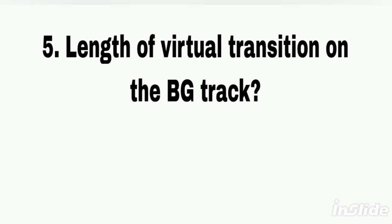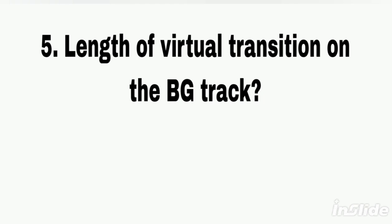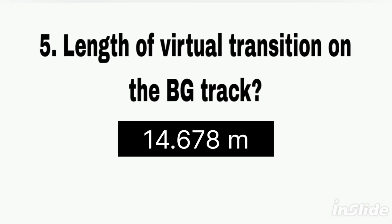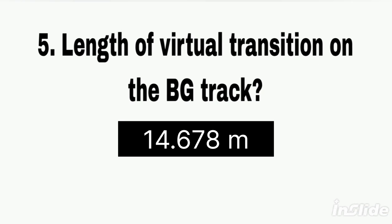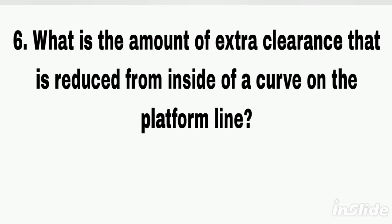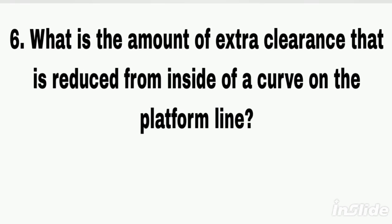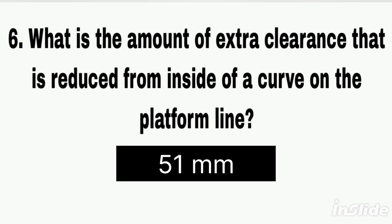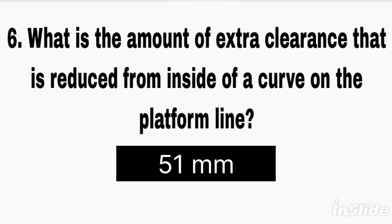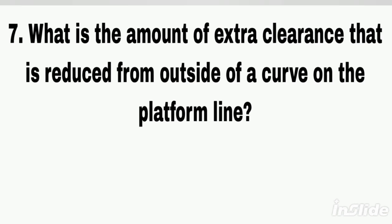Q5. The length of virtual transition on the broad gauge track. Answer: 14.678 meters. Q6. What is the amount of extra clearance that is reduced from inside of a curve on the platform line? Answer: 51 mm.